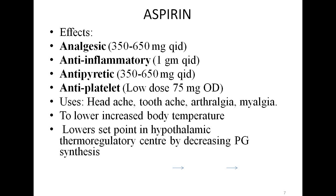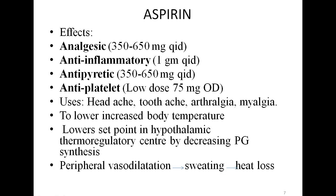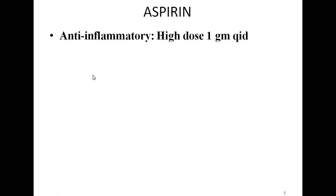The second mechanism by which aspirin decreases raised body temperature is by causing peripheral vasodilation, which causes sweating and therefore a decrease in body temperature. The anti-inflammatory dose of aspirin is high-dose — 1 gram 4 times a day orally.